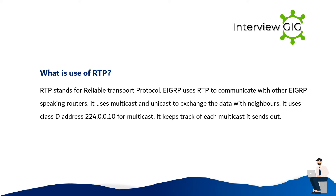It uses multicast and unicast to exchange data with neighbors. It uses the Class D address 224.0.0.10 for multicast. It keeps track of each multicast packet it sends out.